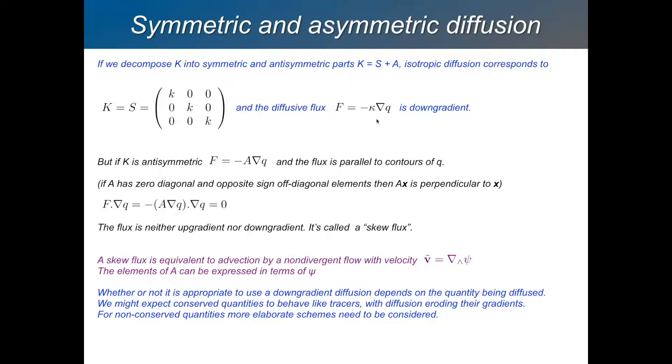But in general, that down gradient flux, or that flux in the same direction as the gradient is associated with symmetric matrices. So here the symmetric part of the matrix, the flux will be in the same direction as the gradient. But then you can also say that this matrix has an anti-symmetric part. So K is equal to S plus A.